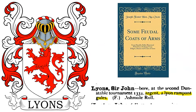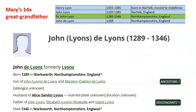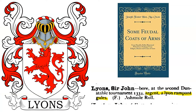What I did is I went to some historical sources, and I found a Sir John Lyons listed in a book known as 'Some Feudal Coats of Arms' by Joseph Foster, published in the early 1900s. This entry says that he bore, at the second Dunstable Tournament of 1334, the following coat of arms: Argent, a lion rampant gules — in other words, a white shield with a red lion. It cites the source as the Ashmole roll. The Dunstable Tournament of 1334 aligns nicely with the years that he lived, so we know that makes sense.